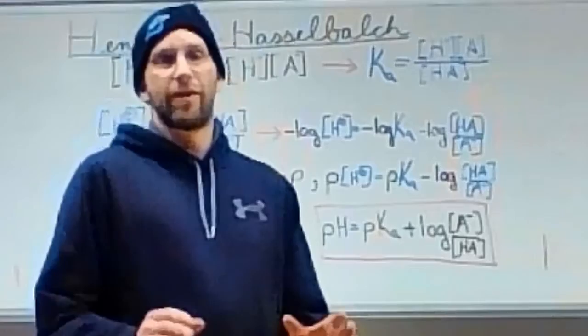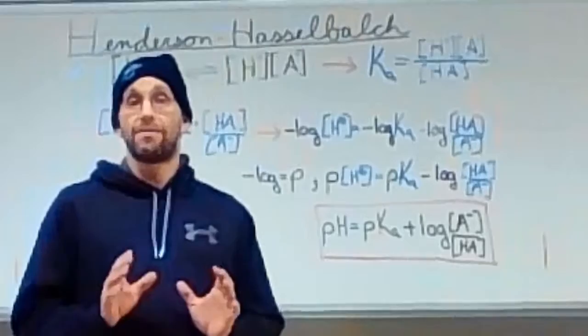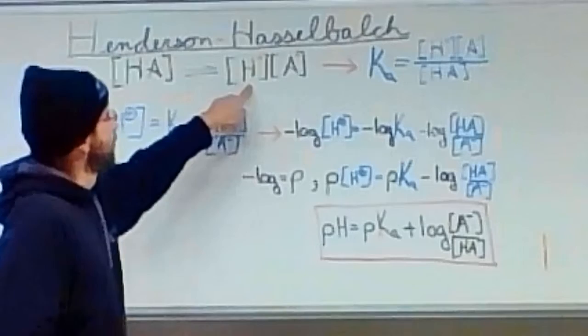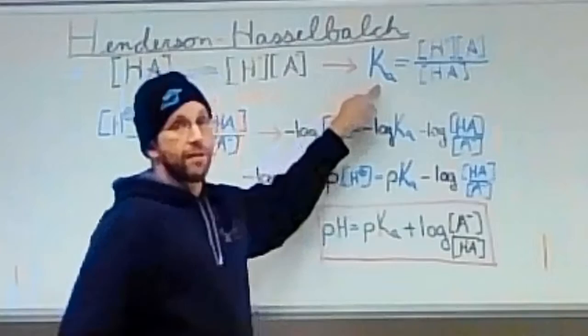Thank you, Mike. As we know, all buffering systems are comprised of a weak acid in an equilibrium with its conjugate base and its proton cation. We can write that out as our weak acid in equilibrium with a proton and its conjugate base.